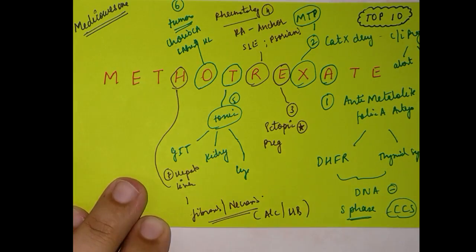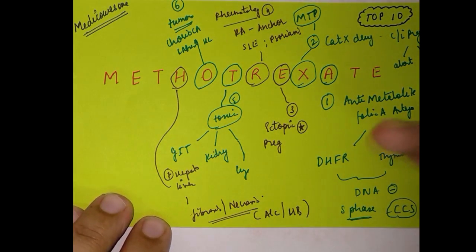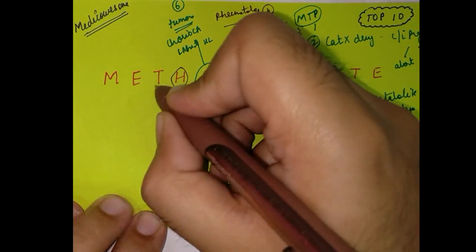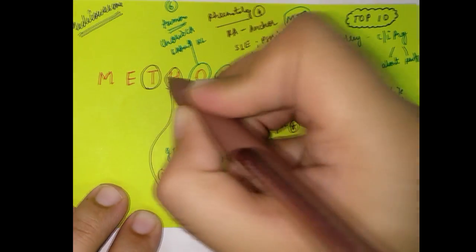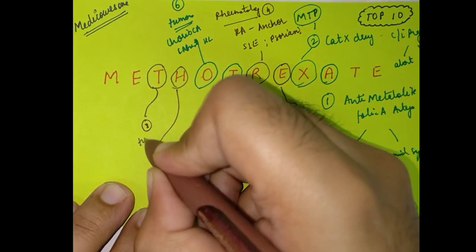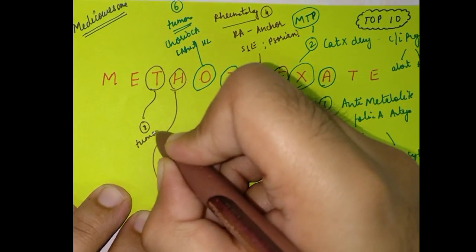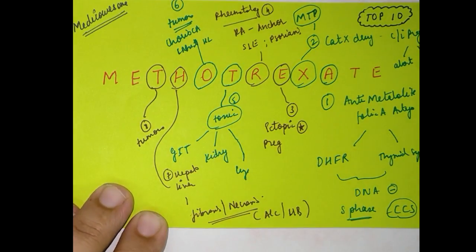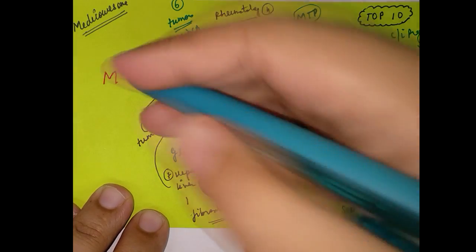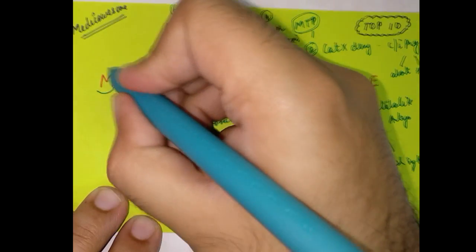The 'T' stands for its ability to lead to tumors — so methotrexate is a tumorigenic or carcinogenic drug, like most cytotoxic anticancer drugs.